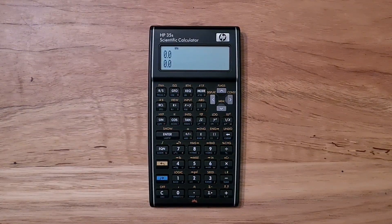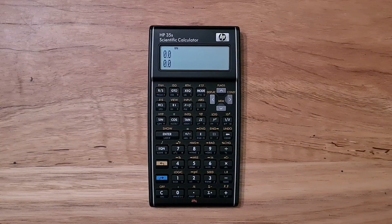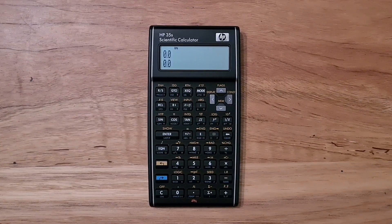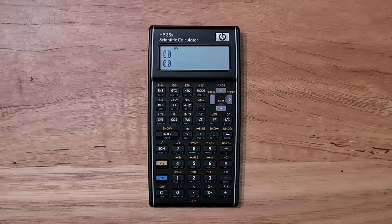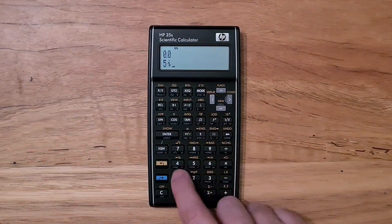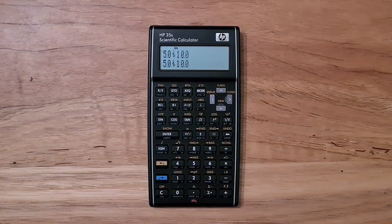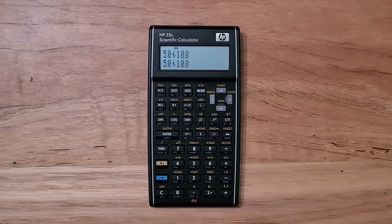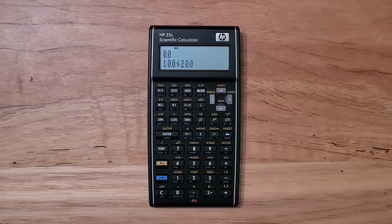The HP-35S has support for complex numbers, vectors, and fractions. Complex numbers are entered using the I key, and they're displayed on a single line, which is nice. They obviously support arithmetic.